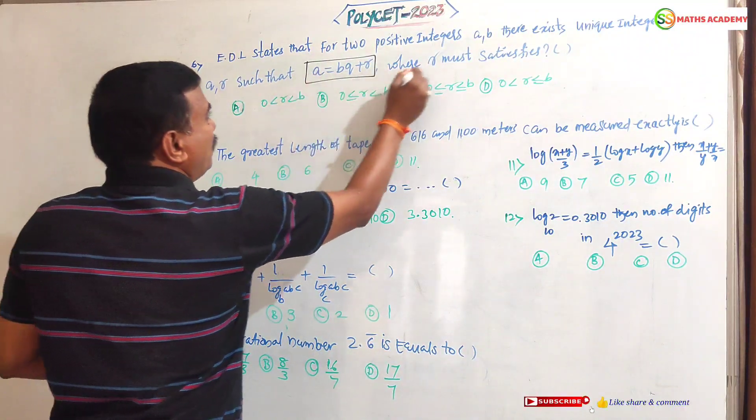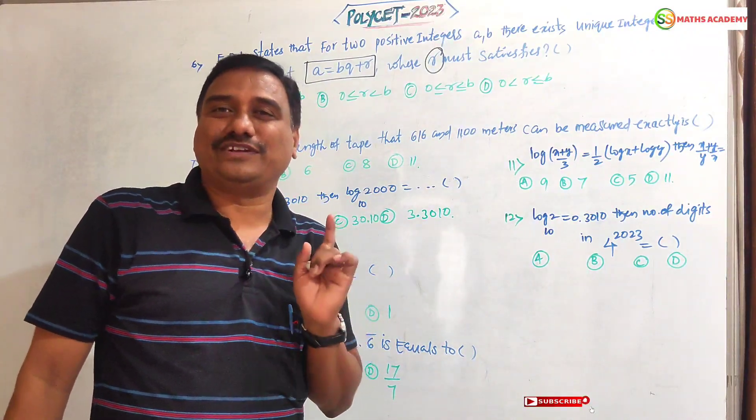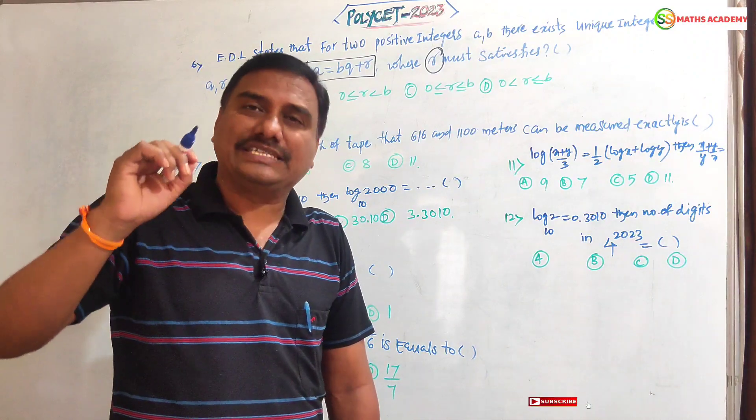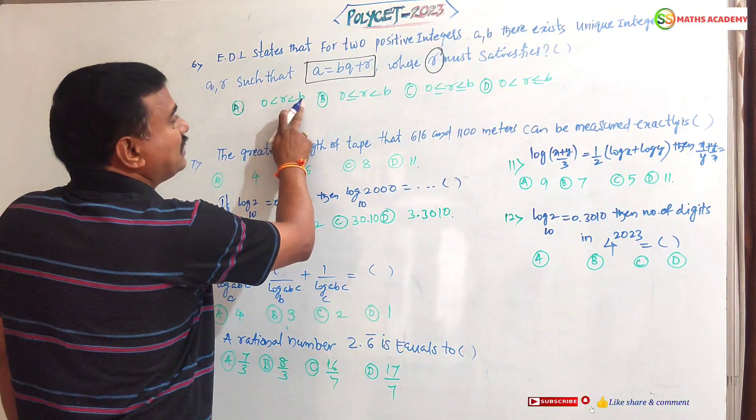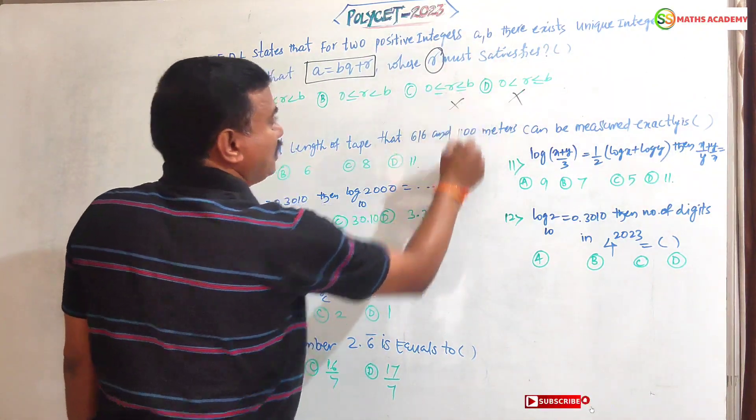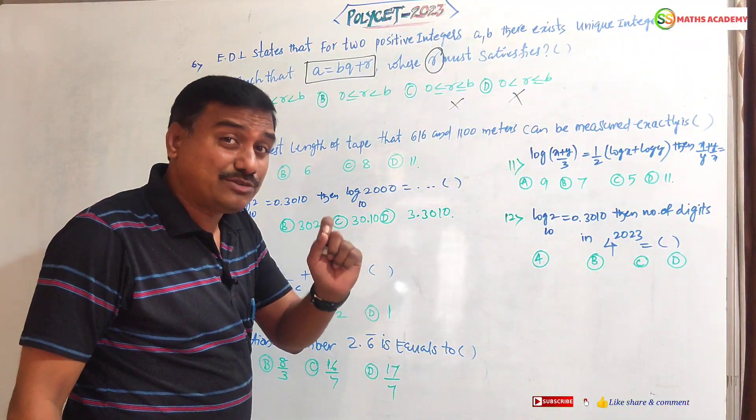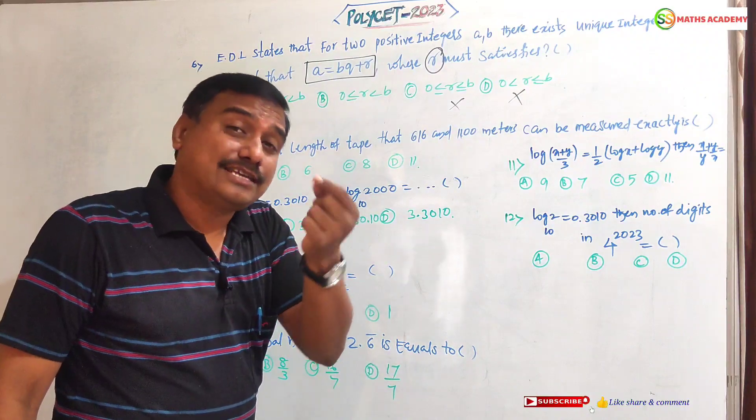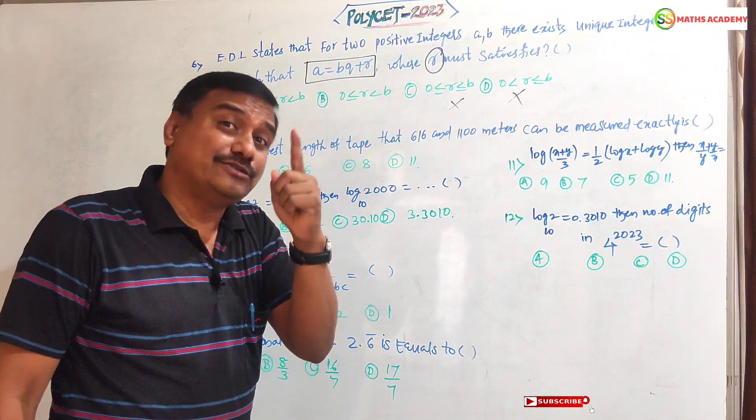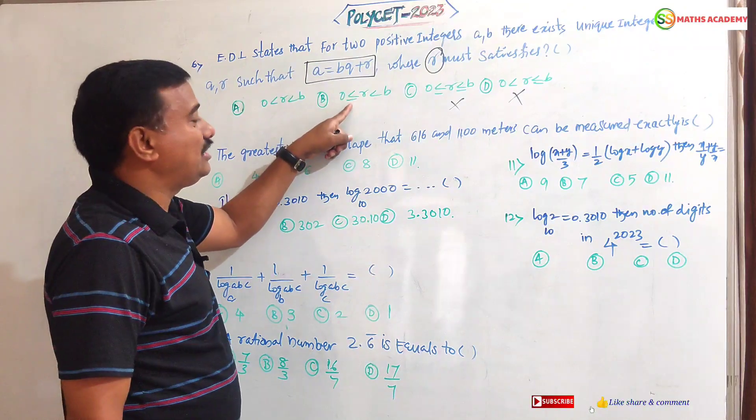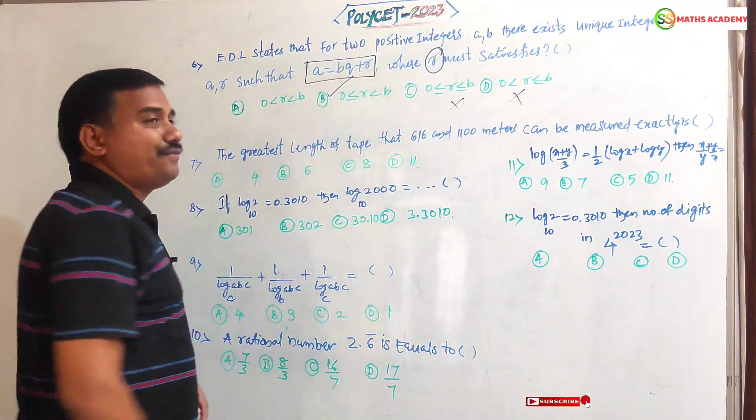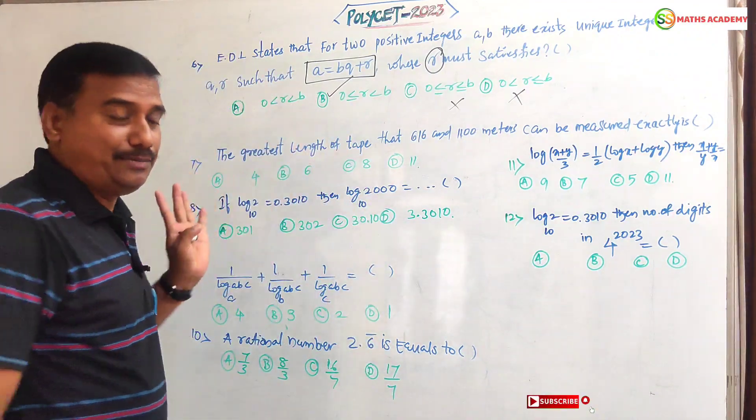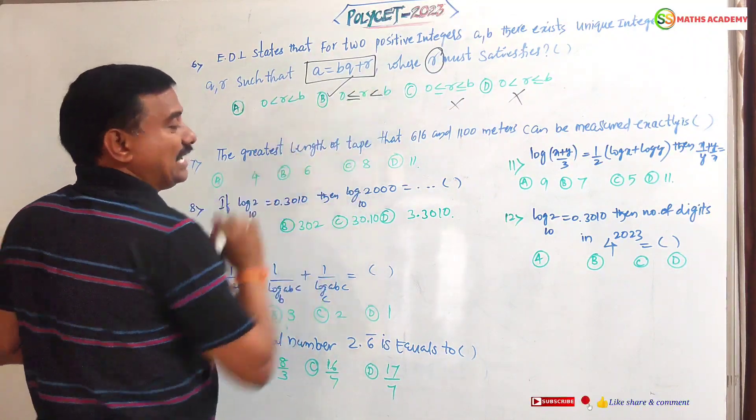This is the condition for Euclid division lemma. When r must satisfy, I told you, very important question for board exam as well as entrance exam. You know very well, the remainder must be less than the divisor. Here less than or equals - these two options are not correct. Remainder always must be less than divisor. r is less than b is correct, and one more small concept: remainder sometimes may be equal to zero. That means zero less than or equals r less than b. This is the perfect condition for Euclid division lemma.